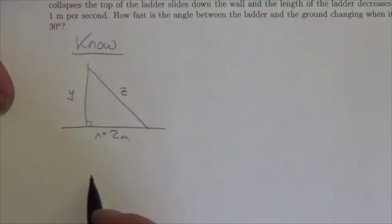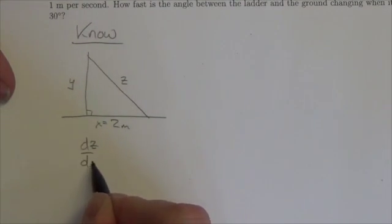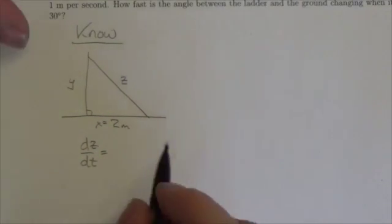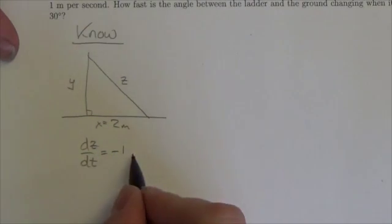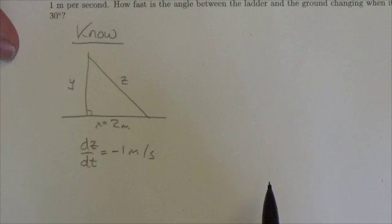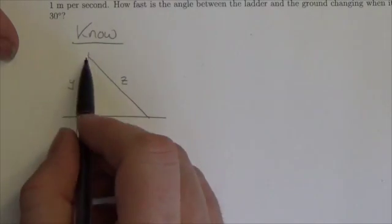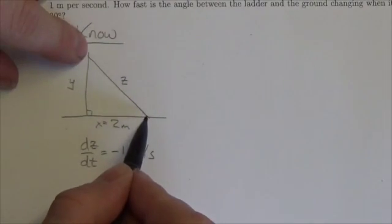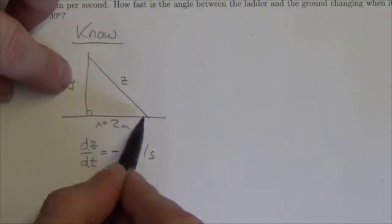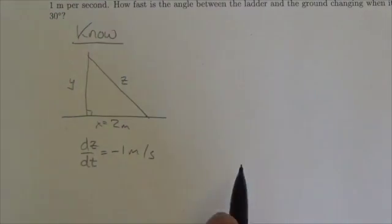So as the ladder collapses and slides down the wall, the length of the ladder decreases at 1 meter per second. So dz/dt is a decreasing amount. It's losing 1 meter per second. So as the top is sliding down, this thing stays anchored, this thing's dropping down like this. The ladder is getting smaller.